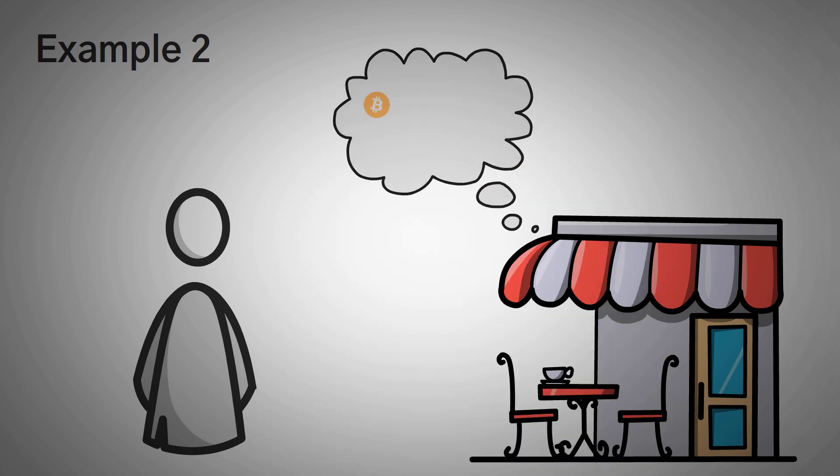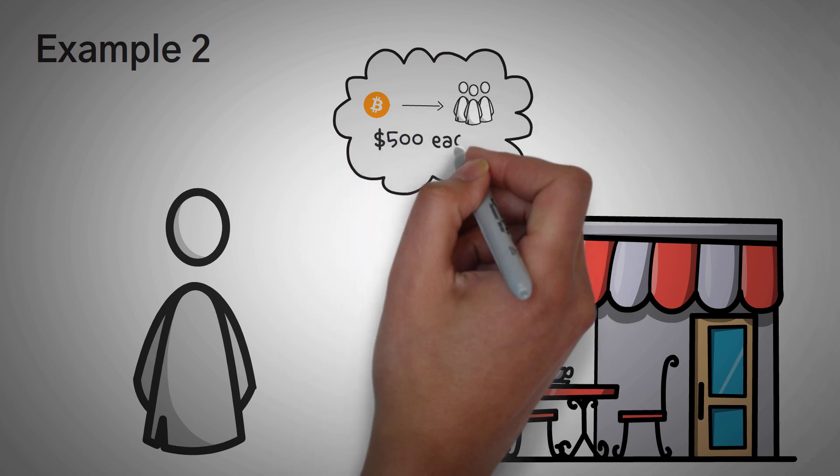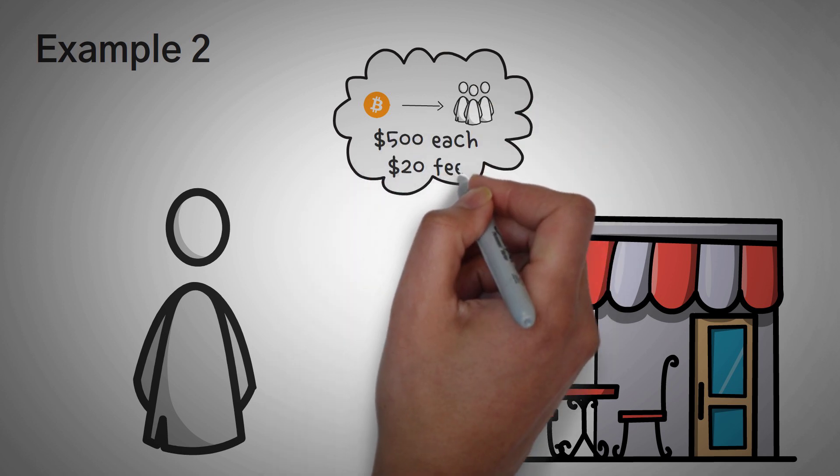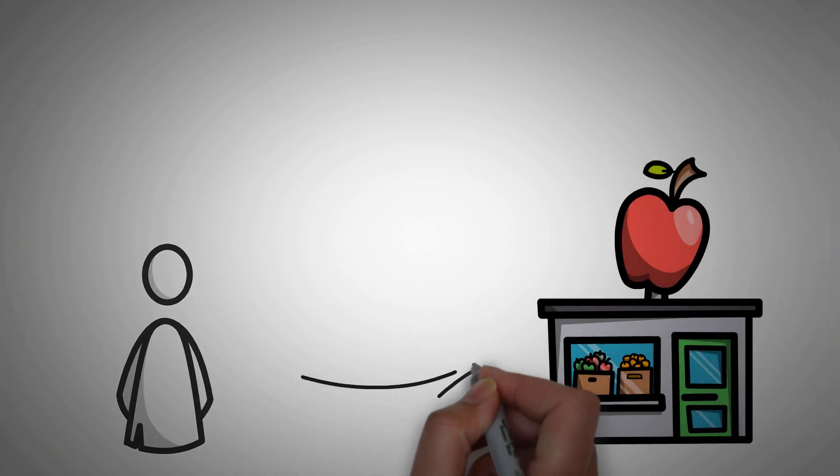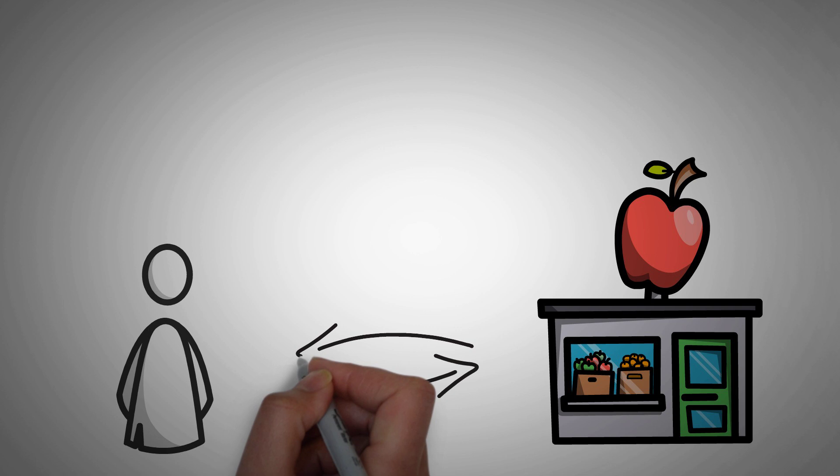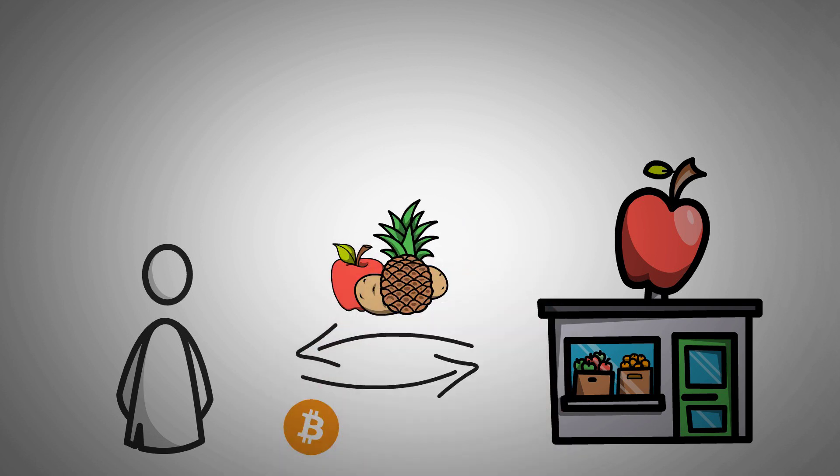A few days later, the coffee shop decides to pay its workers using Bitcoin. It pays them $500 in Bitcoin each, but it also pays the $20 fee. Then, one of the workers goes to a local grocery store with their new Bitcoin and pays for some fruits, probably some apples, potatoes, or pineapples, at least if they watched any of our other videos. They spend $20 of their Bitcoin and pay a $20 fee. Lucky for me, I actually work at that grocery store.